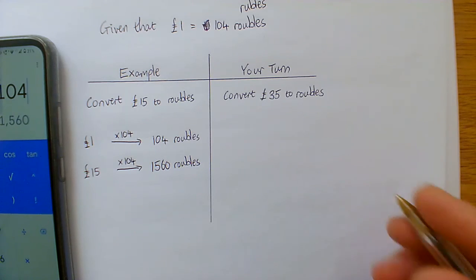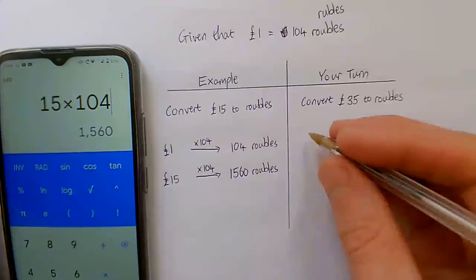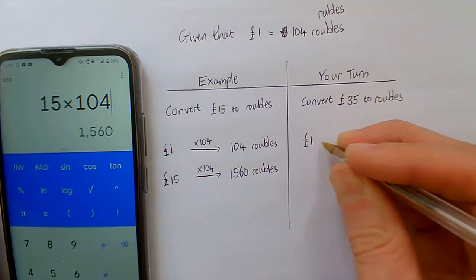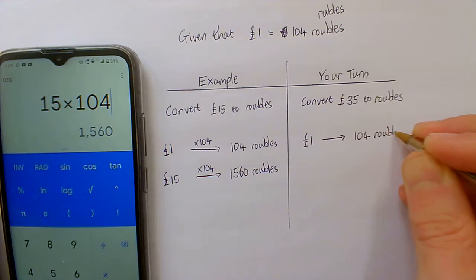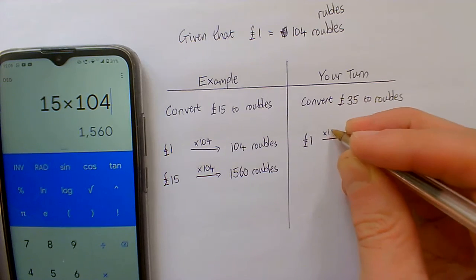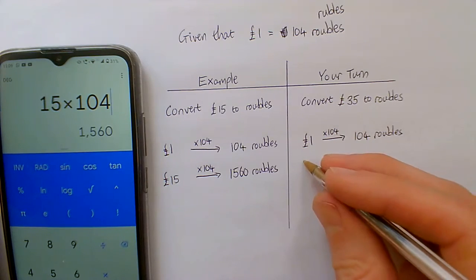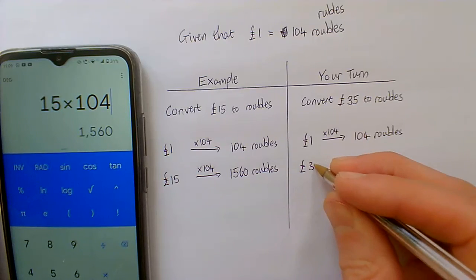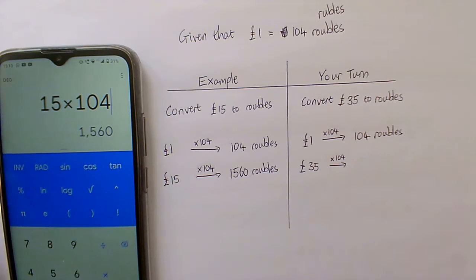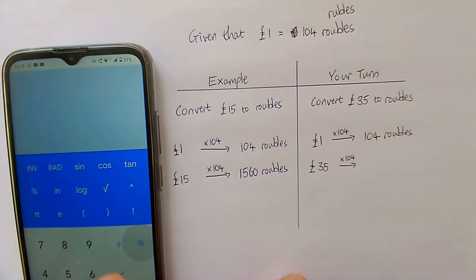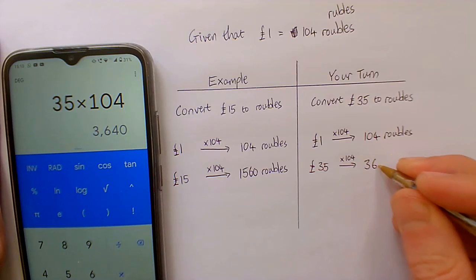Okay, hopefully you paused. Let's just do this last example here. So, lay out £1 goes to 104 rubles. So we're timesing by 104 there. So we're doing the same for our £35. We're timesing by 104. Now, we can put that into the calculator. 35 times 104 should get 3,640 rubles.